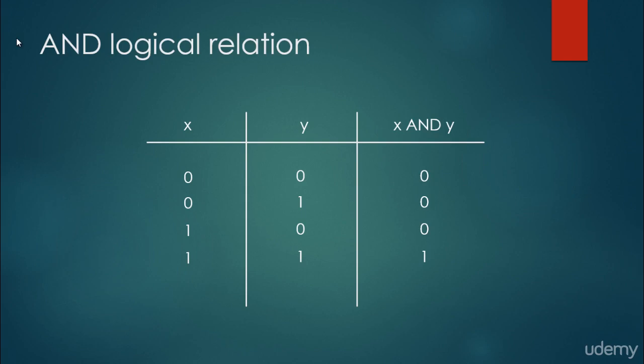In this video we are going to see an example of a neural network and how to construct a neural network for the AND logical relation. The AND table is something like this, where 0 represents false and 1 represents true. It is going to yield 1 when both x and y are 1, and in any other situation the result is 0.